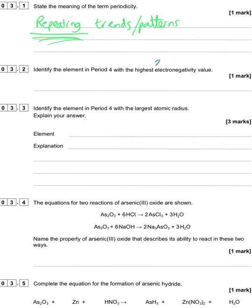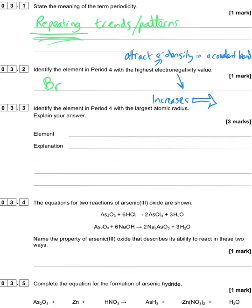Identify the element in period 4 with the highest electronegativity. Electronegativity — the ability to attract electron density in a covalent bond — increases across a period. The best answer is bromine, even though it's second to last; krypton would be acceptable but is less ideal since as a group 0 element it rarely forms covalent bonds, and its electronegativity is often not quoted.